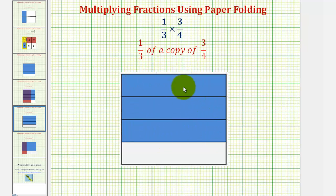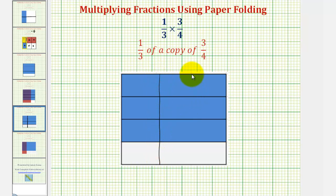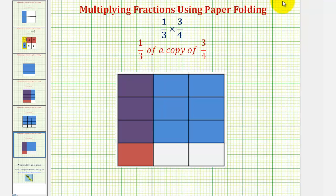Now because we want one-third of a copy of three-fourths, we'll now fold or partition the paper vertically into three equal partitions, so we'd fold the paper along this line and along this line. Because we want one-third of a copy of three-fourths, we would shade one of these three partitions, which I've done here in red, and therefore the product will be the fraction represented by the double shaded region, or these three partitions here.